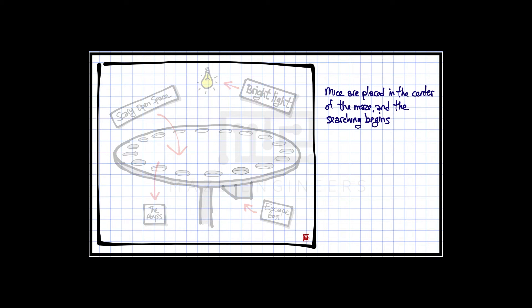Mice are placed in the center of the maze and the searching begins. External and internal visual cues may be used to aid the mice. Errors are made when mice check out non-escape holes.